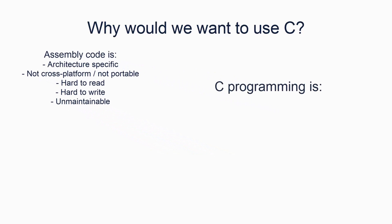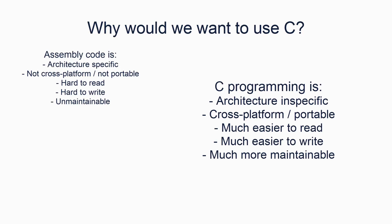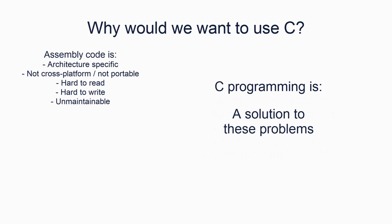The C programming language allows us to solve a lot of these problems. Primarily, it is not specific to any architecture because the compiler converts the C code to machine code and can produce machine code for many different architectures. This means C code is portable. Secondly, C code is much easier to write, read and maintain. It's much faster and easier to write and understand and does not require you to carefully plan which registers are used for what. C handles all of the real low level stuff, like registers in the stack, for you.